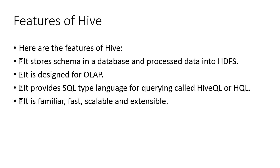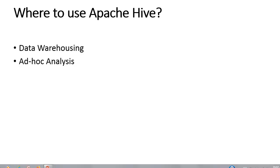Where should you use Apache Hive? Apache Hive takes advantage of both worlds — SQL database systems as well as the Hadoop MapReduce framework. Therefore, it is used by a vast multitude of companies. It is mostly used for data warehousing where you can perform analytics and data mining that does not require real-time processing. Some fields where you can use Apache Hive include data warehousing and ad hoc analysis.